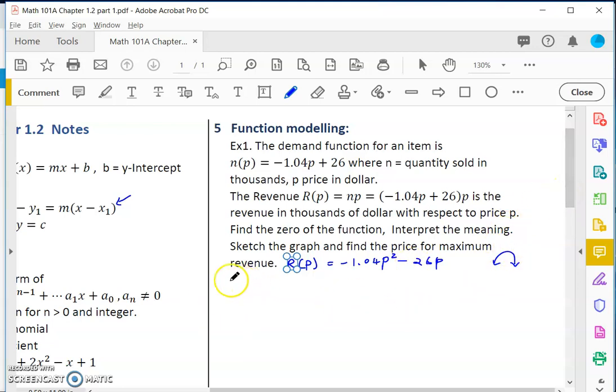We can find the price to give us maximum revenue at the vertex. To graph this we would find zeros. Set negative 1.04p plus 26 times p equal to zero. Notice that it is already factored. We multiply it out to analyze the end behavior, but when we solve it we like it to be in factored form.